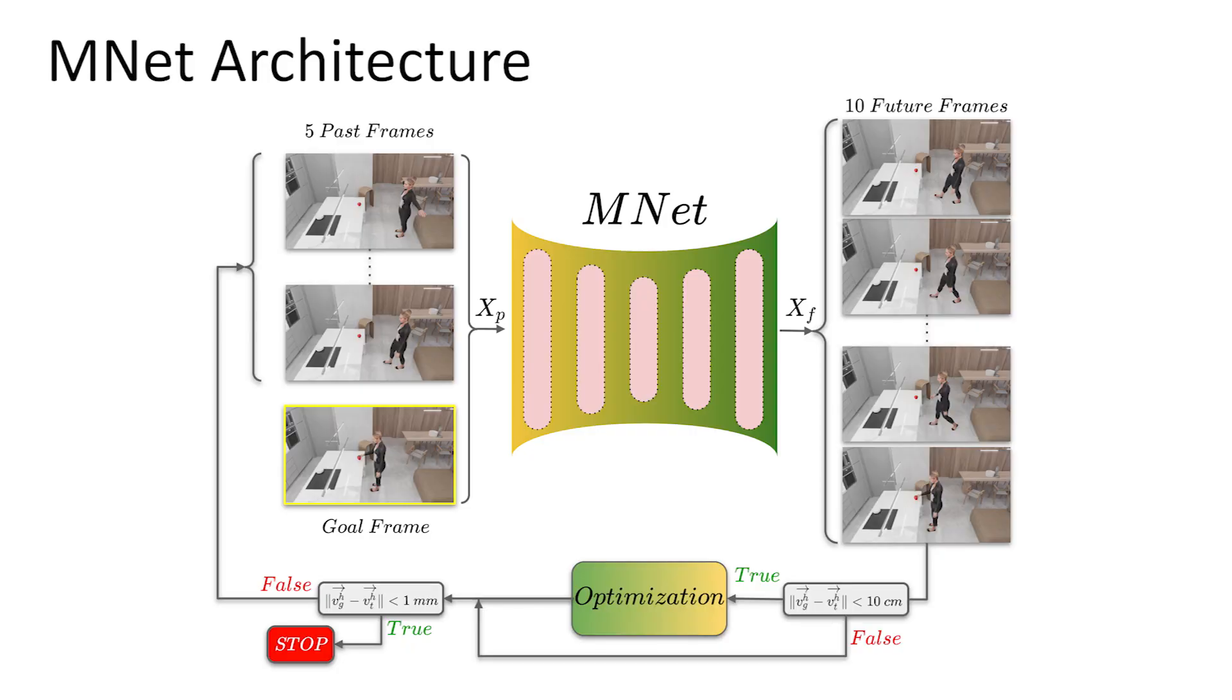Then, MNet generates the motion between the starting pose and the generated goal pose. MNet is formulated as an auto-regressive model, so that future motion generation takes into account past motion.